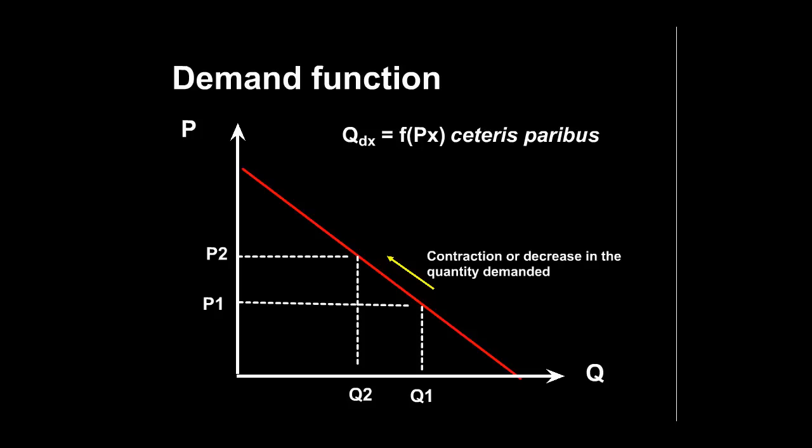When prices go up — for example from P1 to P2 — the quantity demanded falls from Q1 to Q2; we say there's a contraction in quantity demanded. The rationale again lies in the substitution effect: as the price of, say, pizzas goes up, we switch to buying burgers instead. There's also an income effect — if the price of pizzas goes up from £5 to £10, we have less spending power, which may reinforce the substitution effect, though that's a discussion for another time.